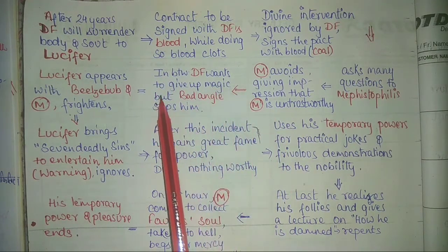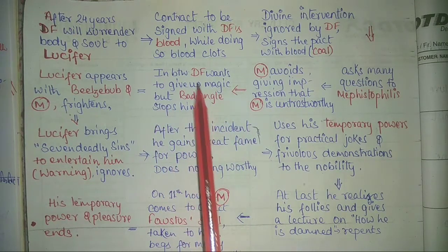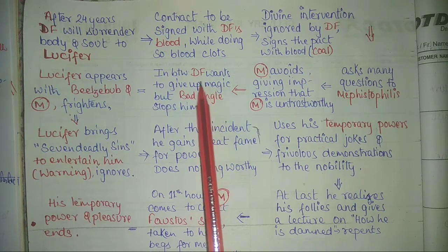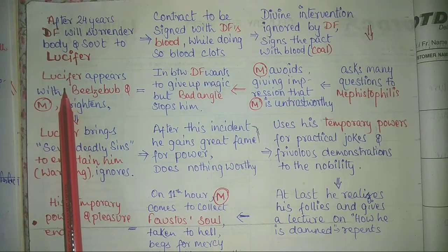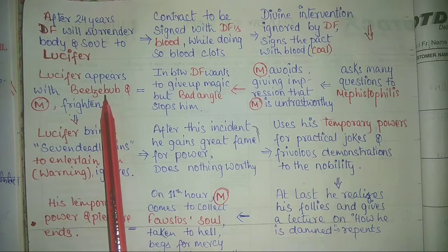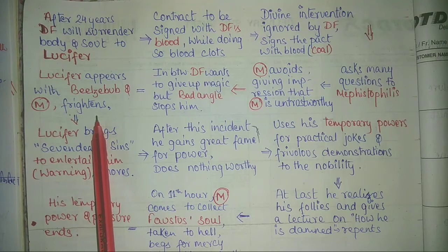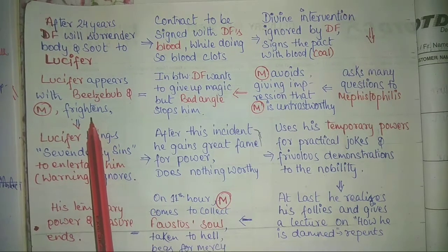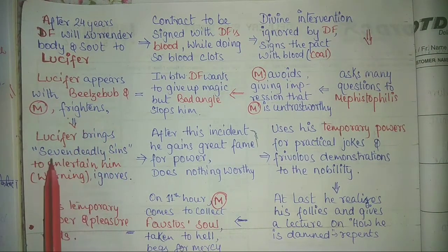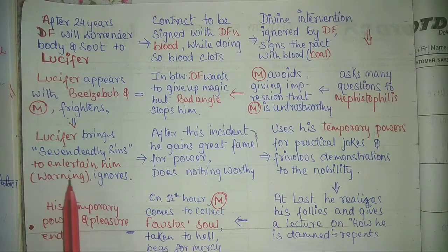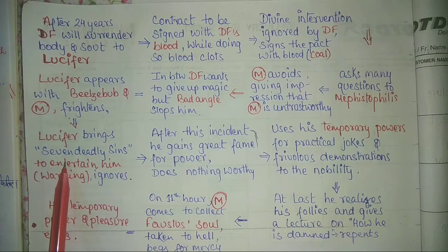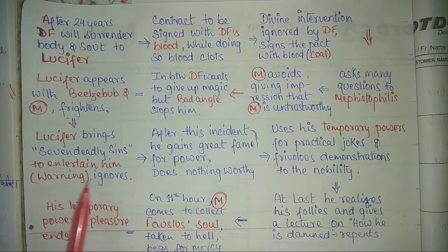In between, Dr. Faustus wants to give up magic, but the Bad Angel stops him. Faustus realizes he may be doing something morally wrong, but Bad Angel appears and stops him. Then Lucifer himself appears with another devil, Beelzebub, and frightens Faustus about the pact, saying he must abide by it or his life will be made hell. Lucifer brings the seven deadly sins in front of him — both to entertain him and as a warning from God — but Dr. Faustus ignores this sign as well.